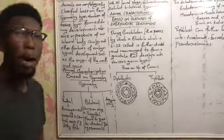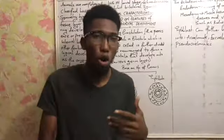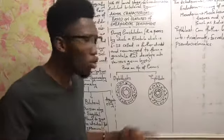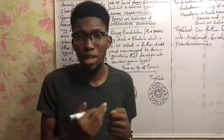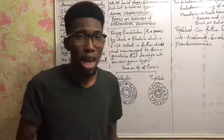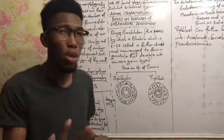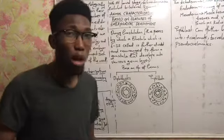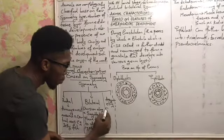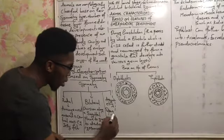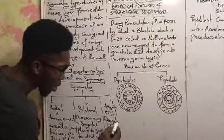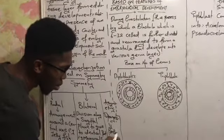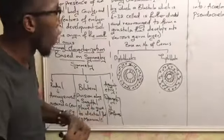Most mammals have bilateral symmetry. Asymmetrical organisms are those that do not show symmetry — they show no symmetrical properties. The major organism that shows asymmetrical properties is the sponge, which we refer to as the Porifera.